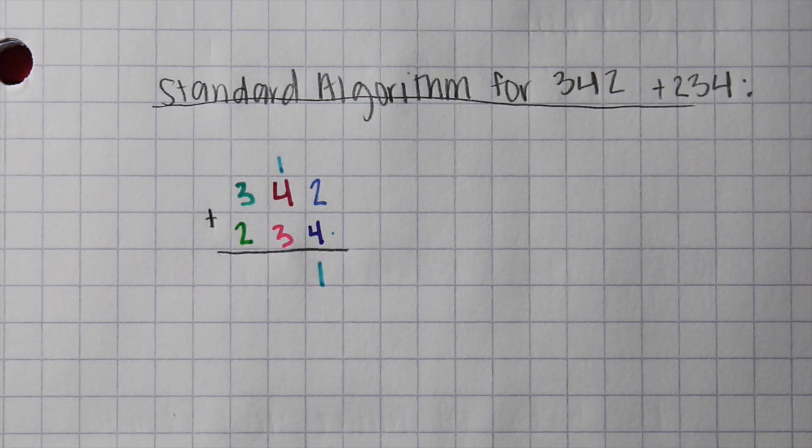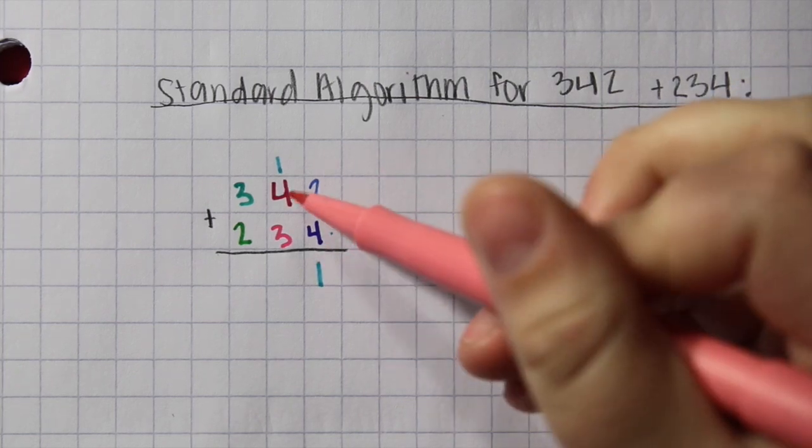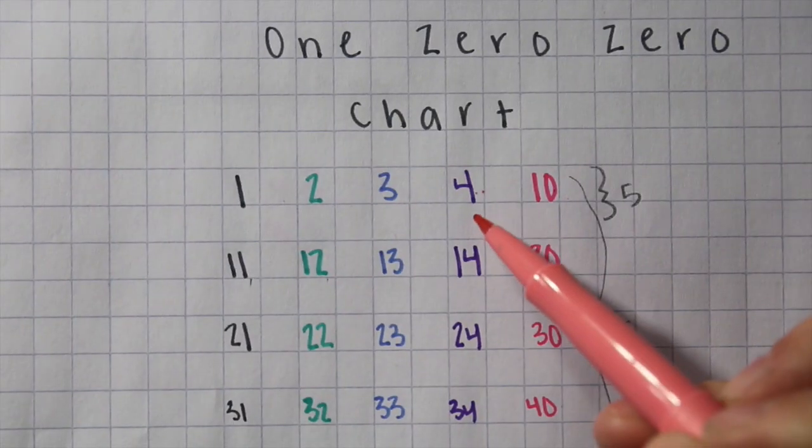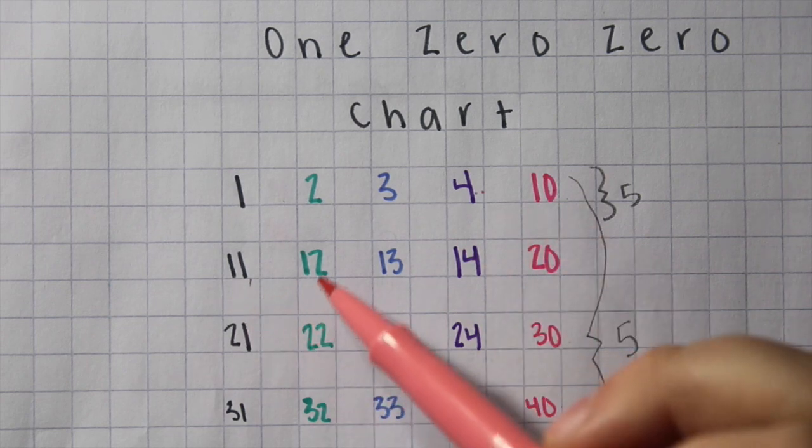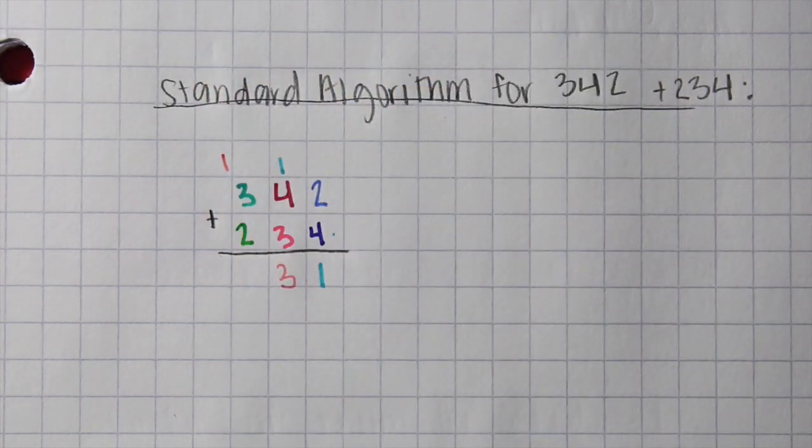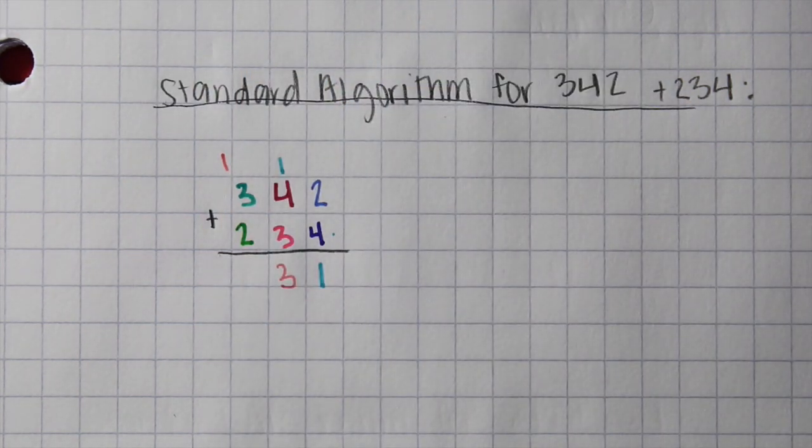Then we're going to add 4 plus 3 plus 1. So again, we're going to break out that 100 chart. When we add the 3, we land at 12, but that extra 1 is going to get us to 13. So again, we're putting the 3 there and the 1 in the 100's column for that extra value.